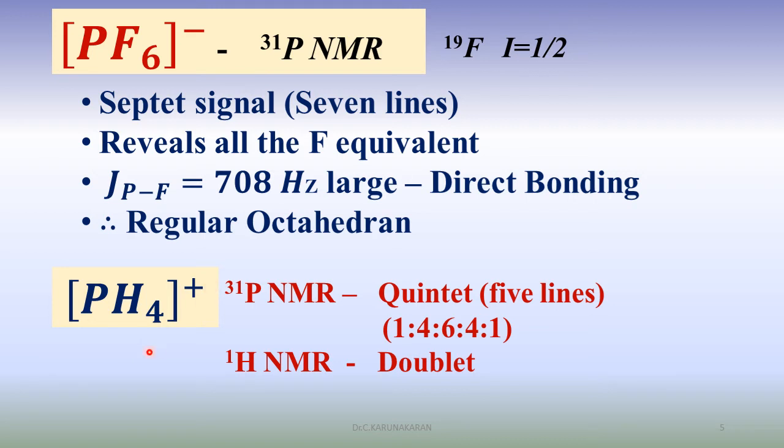PH4+, like NH4+ ammonium ion, phosphonium ion. Using phosphorus-31 NMR, phosphorus-31 couples with the 4 protons to give 5 lines, 4n+1, with the intensity ratio. Whereas proton NMR, all the protons are equivalent and couple with the phosphorus I equal to 1/2.